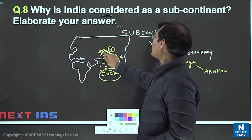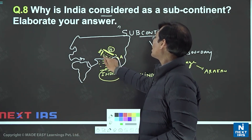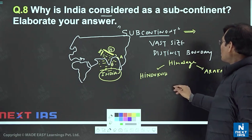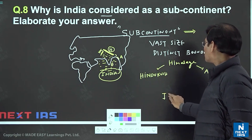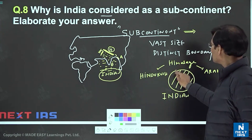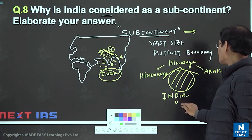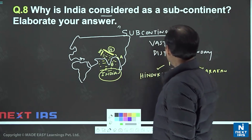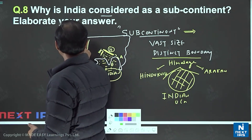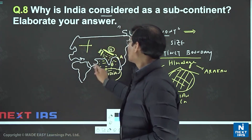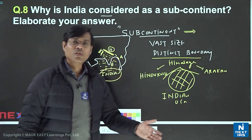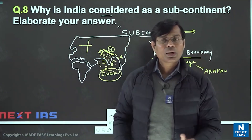The subcontinent has a vast size, including Sri Lanka, Nepal, Bhutan, Pakistan — seven countries altogether. This land between the Indian Ocean, the Himalaya, the Hindu Kush, and the Arakan Yoma is very well protected. It is called the Indian subcontinent because of its distinct boundary. Compare this to Europe, where the Ural Mountains supposedly separate Asia and Europe, yet they can be easily crossed — India's boundaries are far more defined.